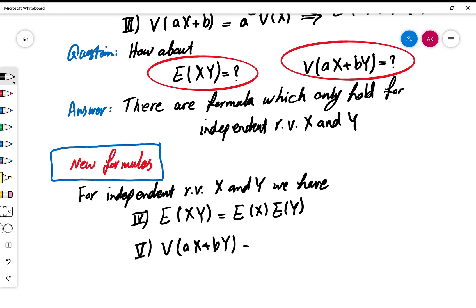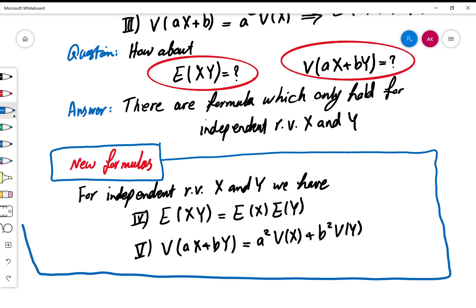And V(aX+bY) is equal to a²V(X)+b²V(Y). Well it means that yes, there are formulas, these are nice formulas we can use in the next example, but you have to be very careful. These are only true for the cases that X and Y are independent random variables.